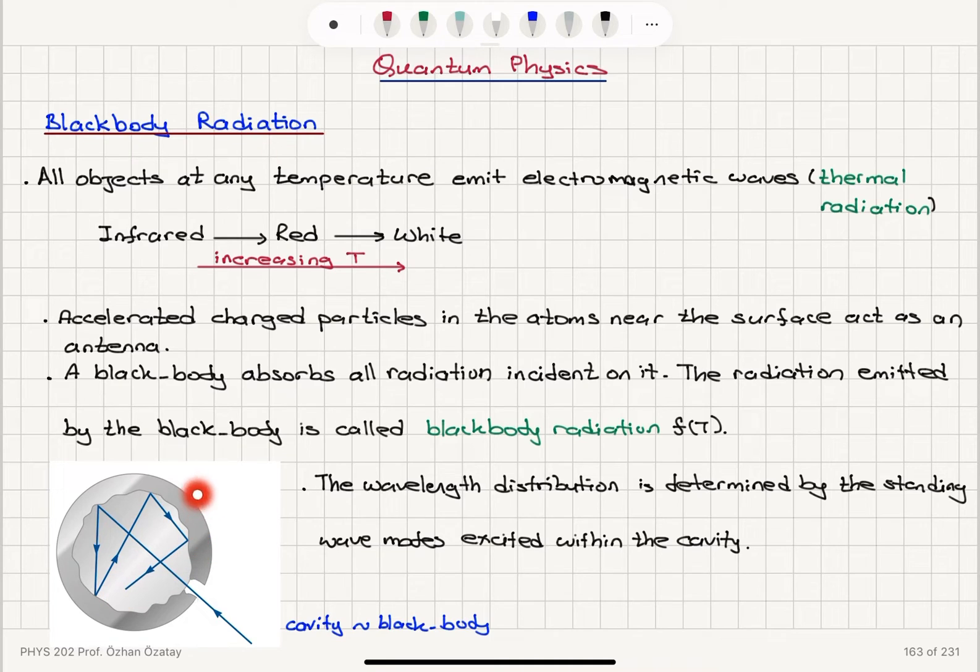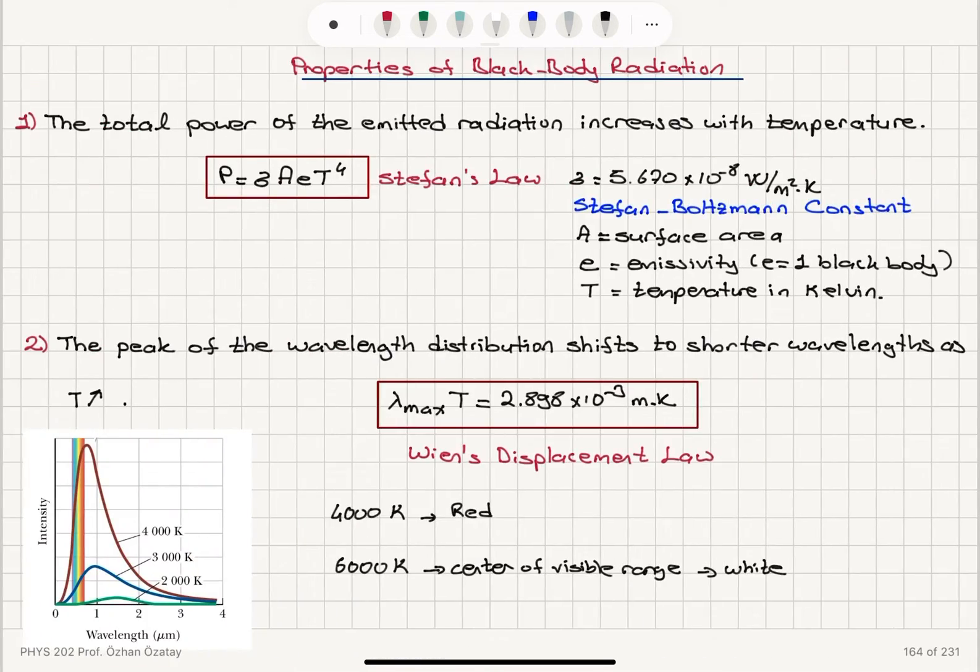A black-body is a special object. It absorbs all the radiation incident on it. And the radiation emitted by a black-body, thermal radiation, depends on standing wave modes inside the black-body. For example, in this cavity, this can be seen as a black-body.